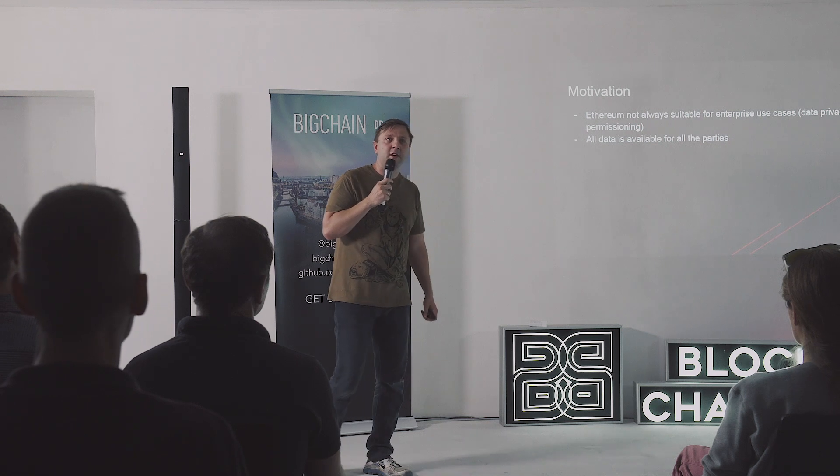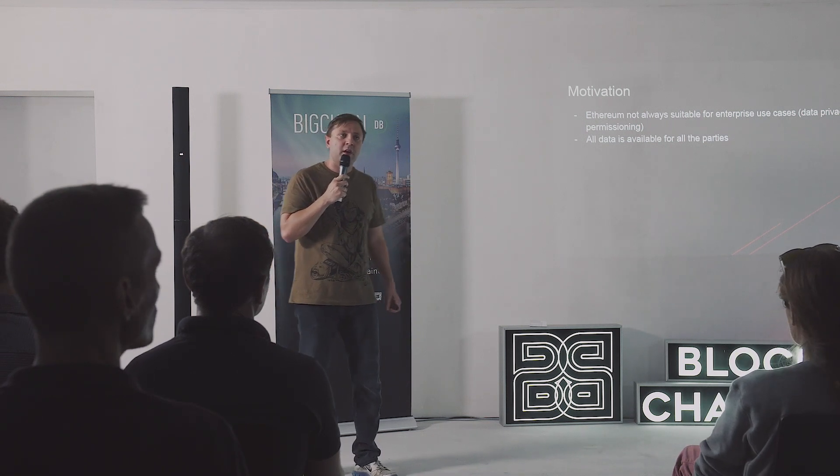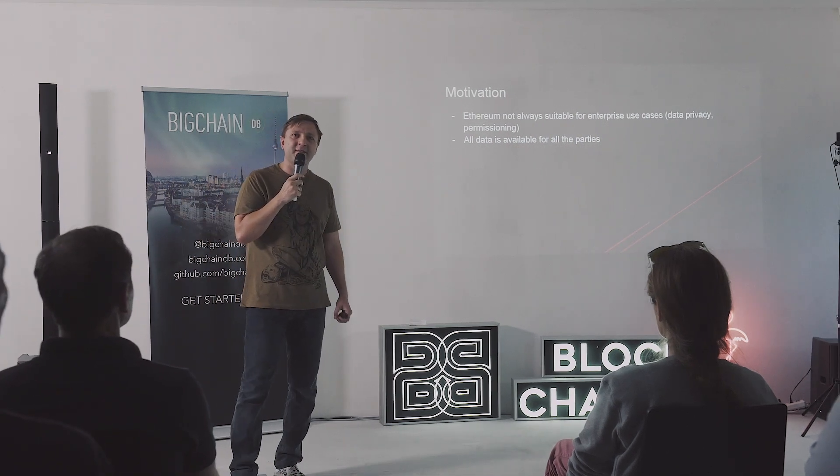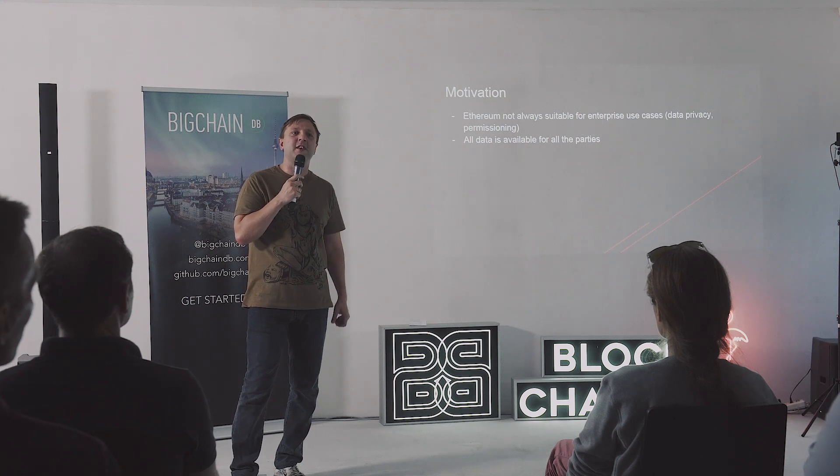There are multiple reasons, of course. Here I list two of them because they are important from the standpoint of this presentation. First of all, it's permissioning. As you probably know, in Ethereum every node can do anything, and all permissioning that exists right now can be done at the smart contracts level or somewhere else. The second part, also pretty important, is data privacy. You wouldn't believe how many people don't know that everything they're doing in terms of their contracts is publicly available.